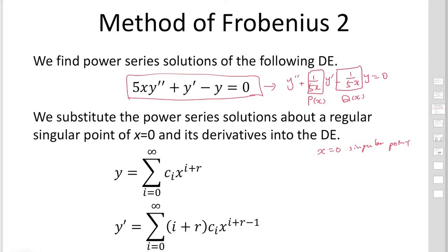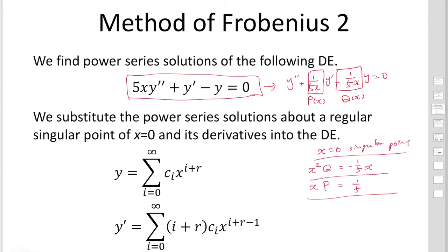We would like to determine whether this singular point is a regular or irregular singular point. We have to consider x²·Q and x·P. x·P = x·(1/5x) = 1/5, and x²·Q = −1/5. Both of them are analytic at x = 0, so x = 0 is a regular singular point. Therefore, we can apply the Frobenius method to solve this equation.